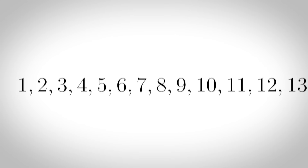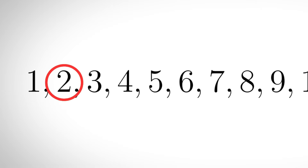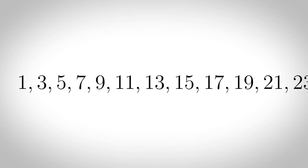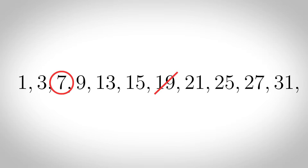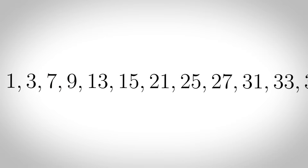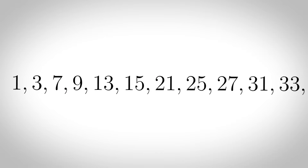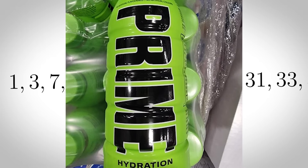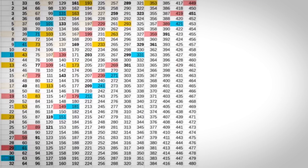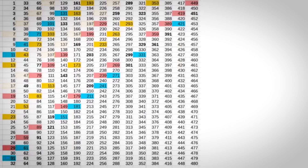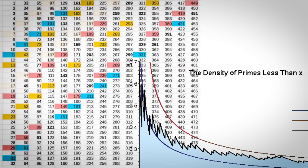Lucky primes: to find the sequence of lucky numbers you start with the natural numbers. Start with two and remove every second digit. After we do this the next number after two is three, so we remove every third digit. The next number after three is seven, so remove every seventh digit. If you keep doing this forever you'll eventually get the lucky numbers, which look prime and act prime but aren't. Just like primes they're unpredictable — we don't know if there are infinitely many twin lucky numbers and their density follows the logarithmic curve.